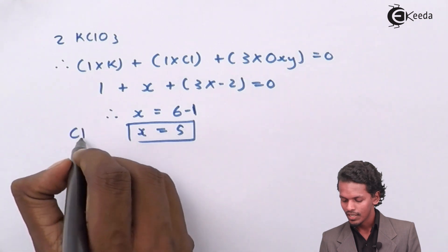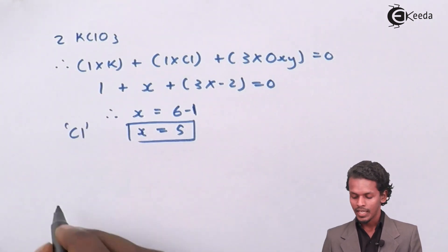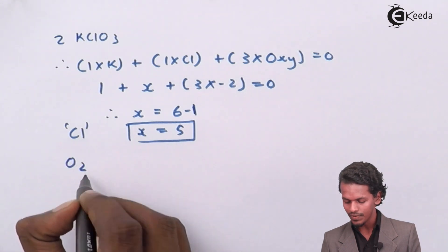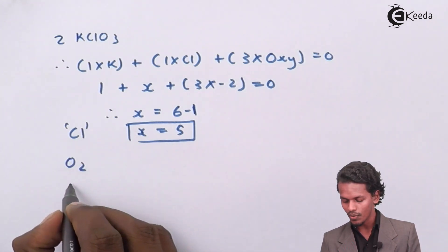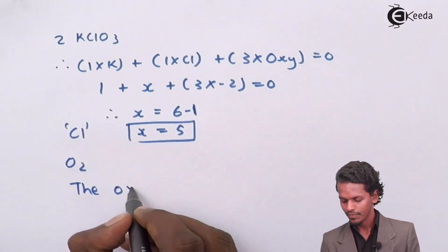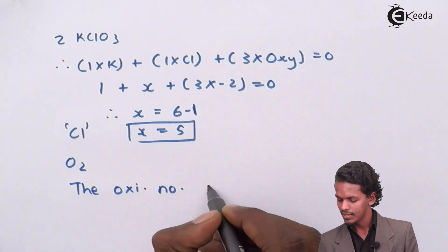So in this case, the chlorine atom has an oxidation number of plus 5, while in case of oxygen, if we observe, the oxidation number of oxygen will be 0.